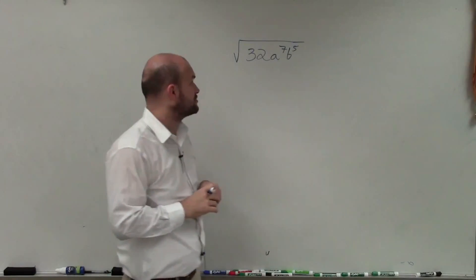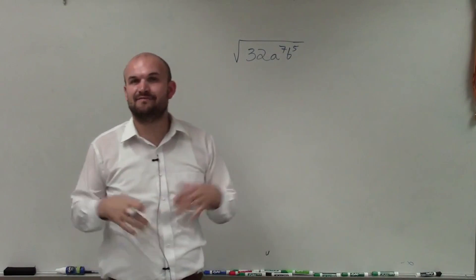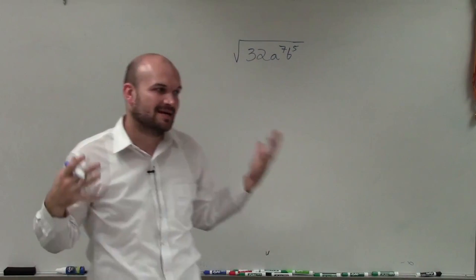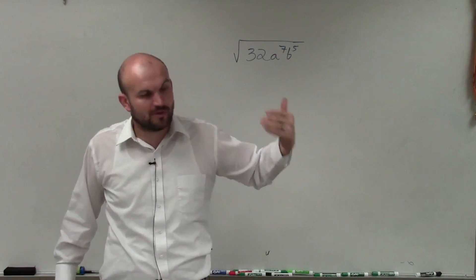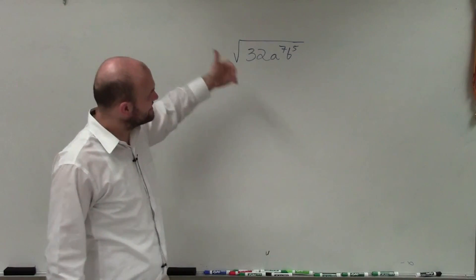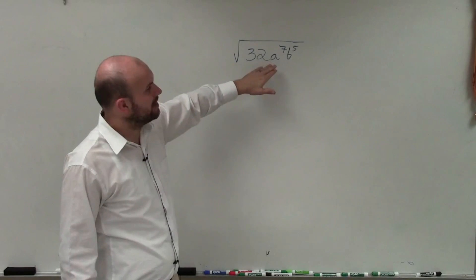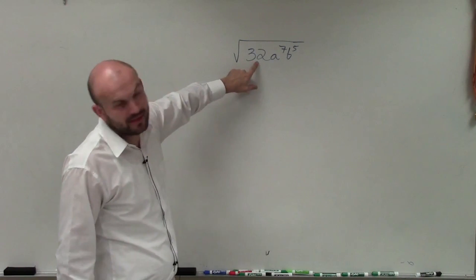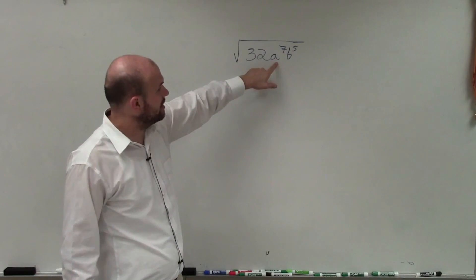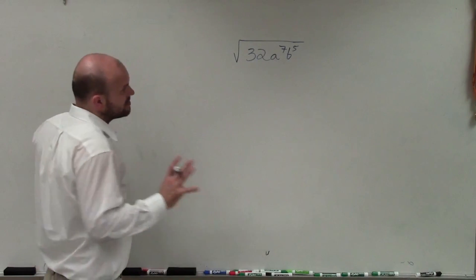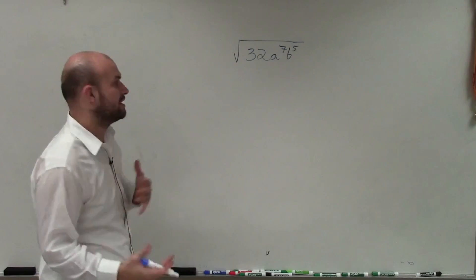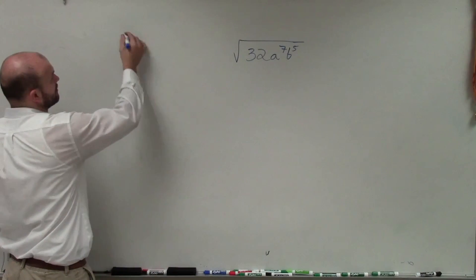I'd like to show you how to take the square root of 32 times a to the seventh times b to the fifth. We need to determine what we can take the square root of and what we cannot. Taking the square root means finding what value multiplied by itself gives our radicand. There's no number multiplied by itself that gives 32, a to the seventh, or b to the fifth. However, there are numbers we can take the square root of to get an integer — we call those perfect squares: 4, 9, 16, 25, 36, and variable examples like x squared, x to the fourth, x to the sixth.